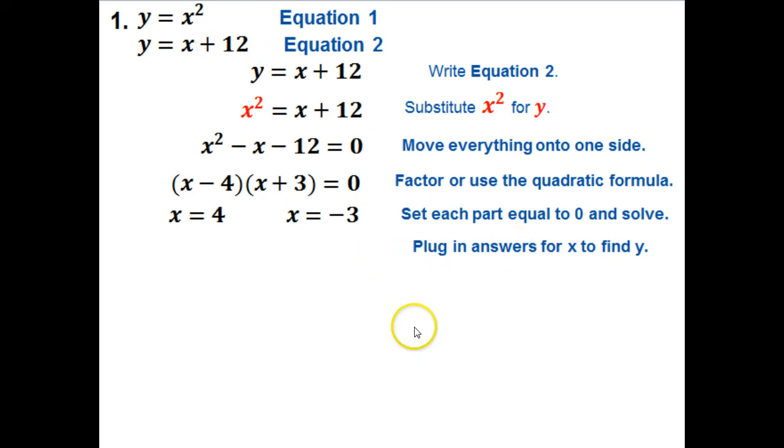Starting with x = -3. Using the equation y = x + 12, I substitute: y = -3 + 12. So y equals 9. If x equals -3, then y equals 9. That's one answer: (-3, 9).